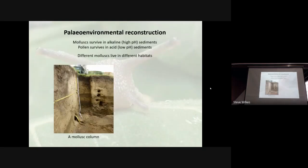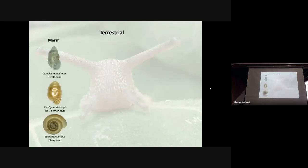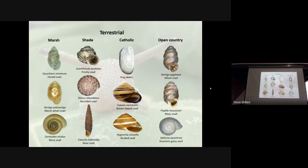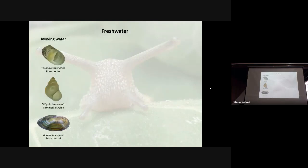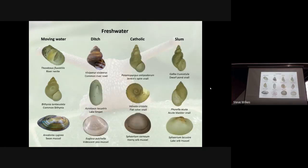My interest is also in using mollusks to look at different landscapes. You excavate, take samples and then extract all the mollusks. You can divide them into different habitats which they would live in. These are just some examples of the different kinds of species which occur in different habitats — and depending on the numbers you find for each, you could work out the habitats. The same applies to freshwater species: lots of different species occur in different habitats.